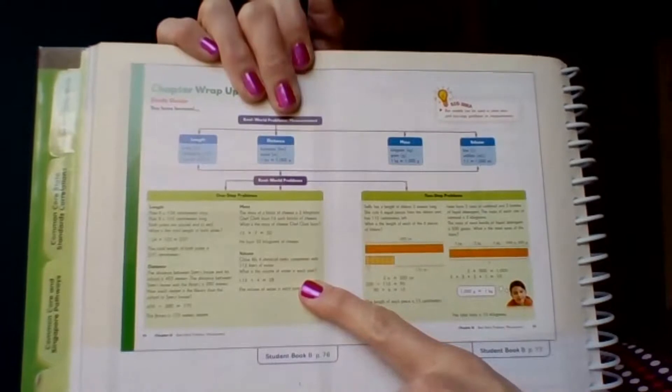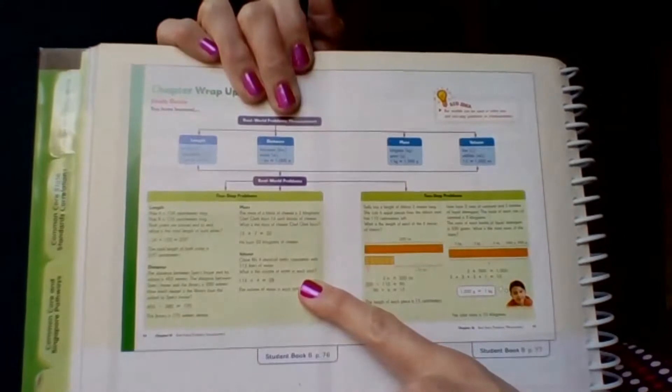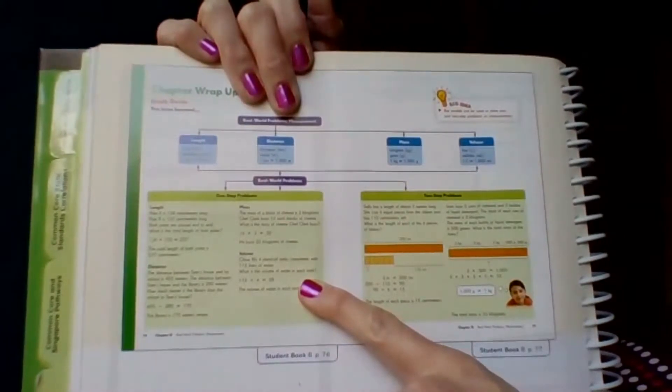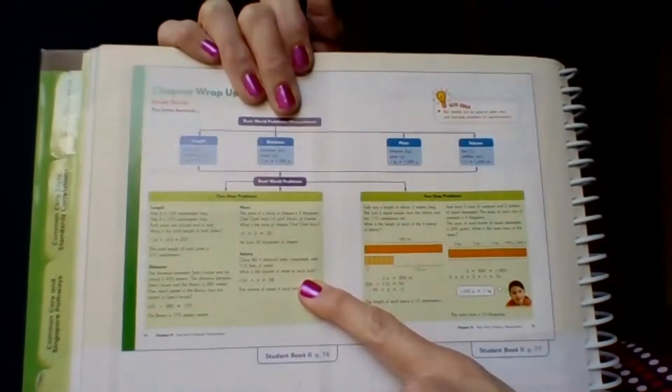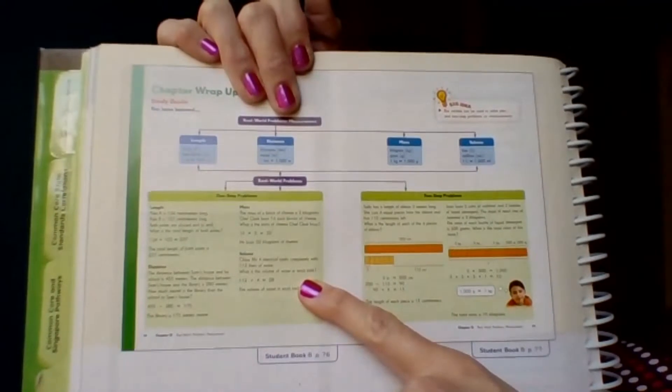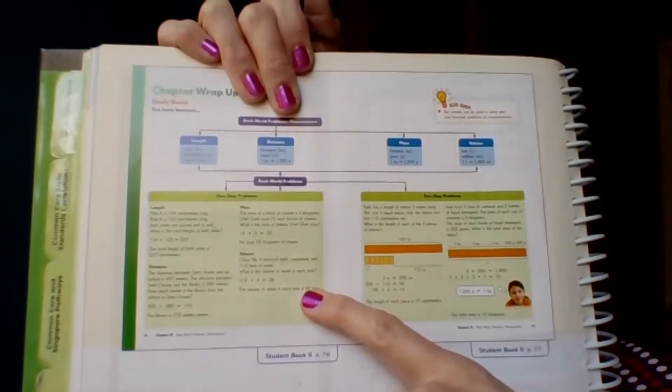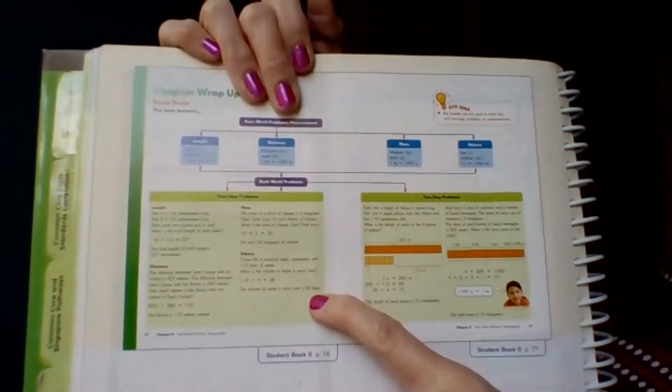And then here's an example of a one-step problem with volume. Chloe fills four identical tanks completely with 112 liters of water. What is the volume of water in each tank? 112 divided by four is 28. The volume of water in each tank is 28 liters.